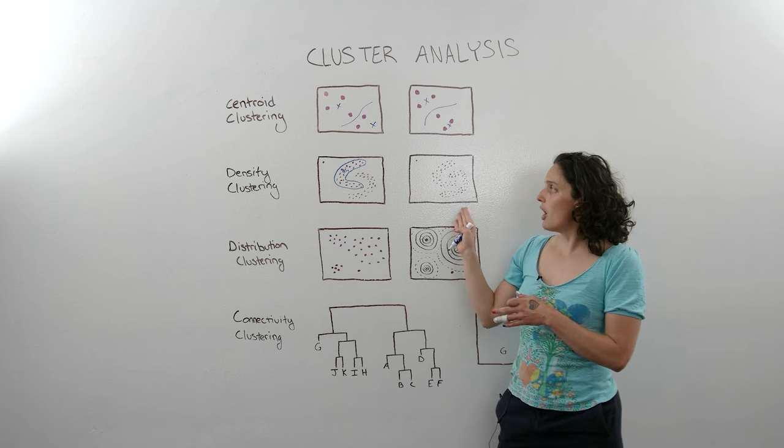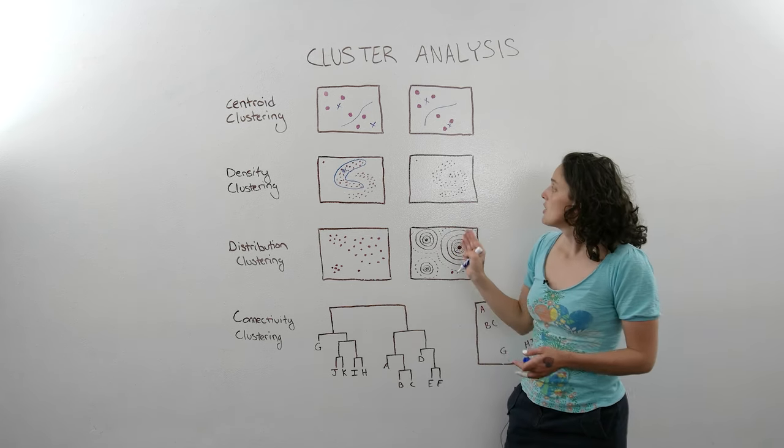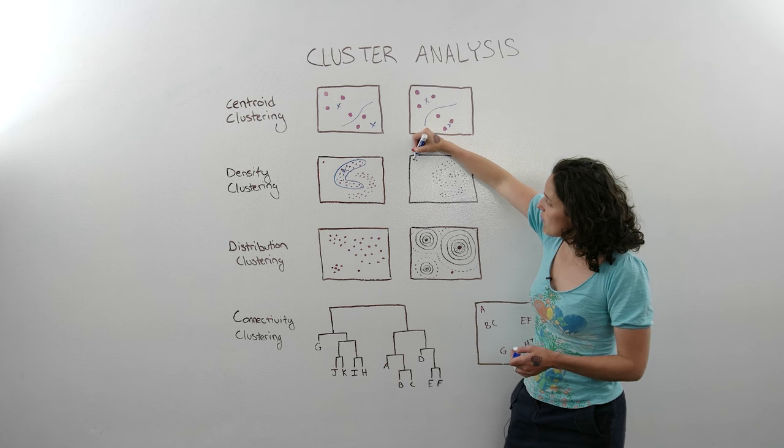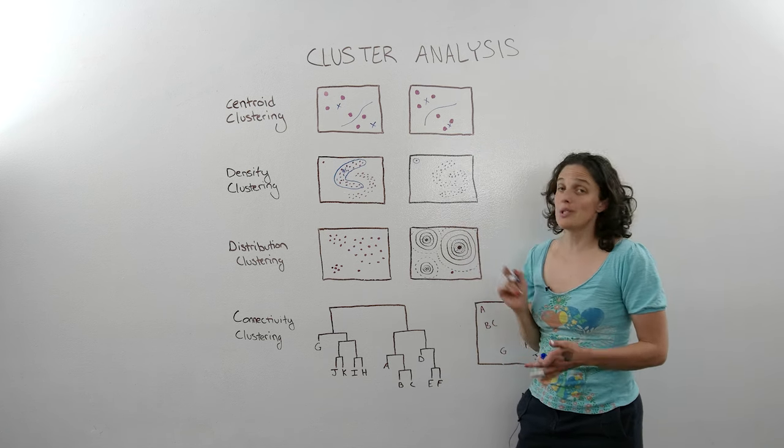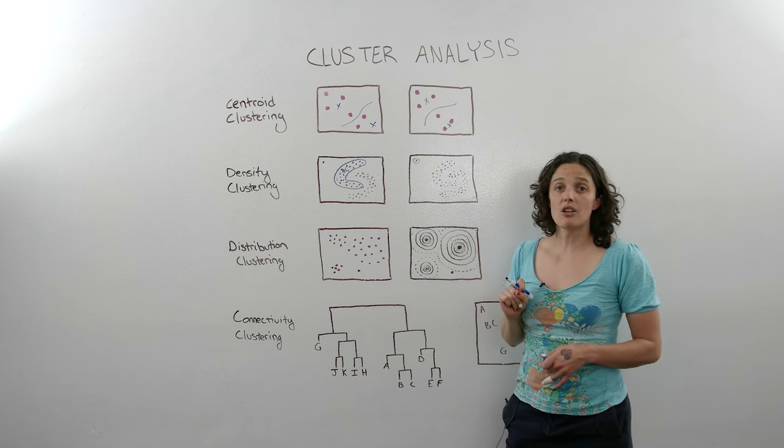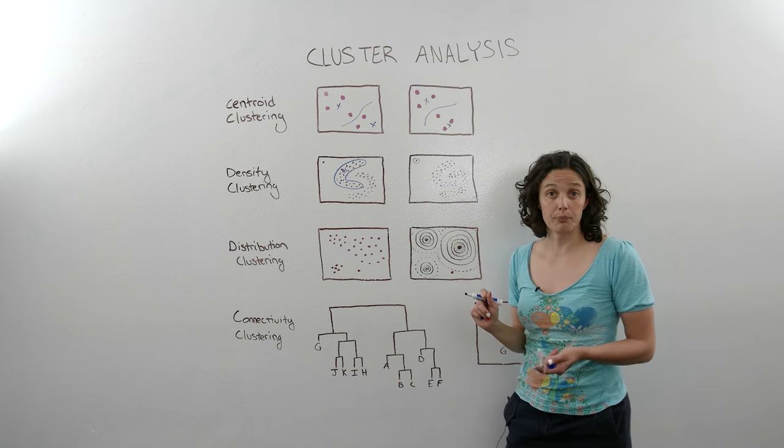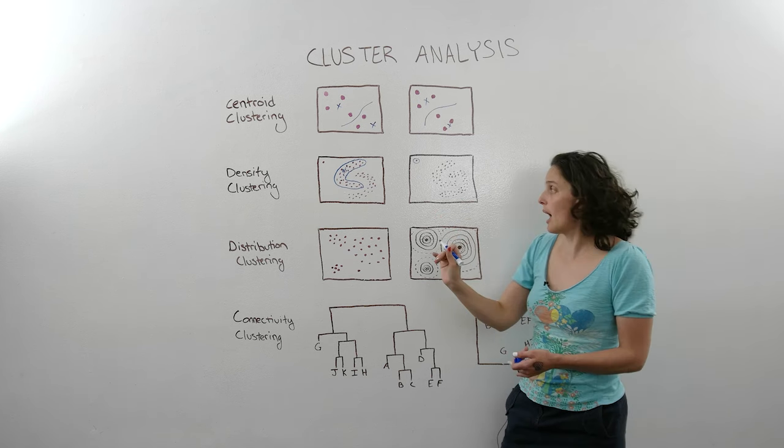So then it goes through and it says, well, we have all these other points that we need to understand what clusters they belong to. So let's pretend for a minute that it picks this random point out here. As you can see, it's not very close to anything. So in most of these techniques, they would just be considered outliers and not part of any group.